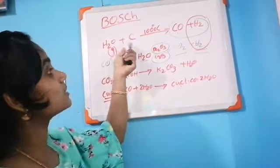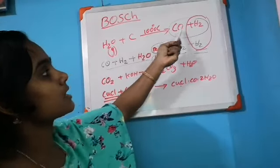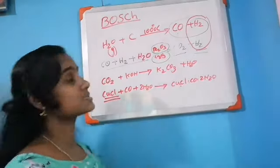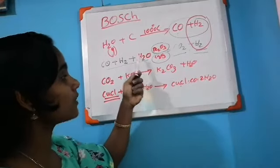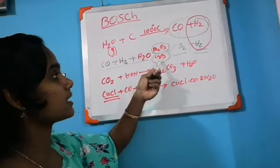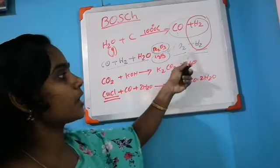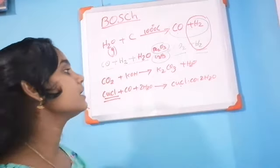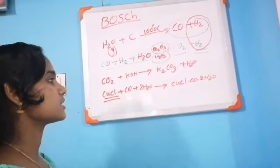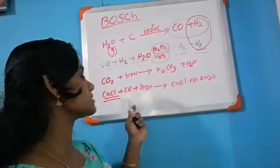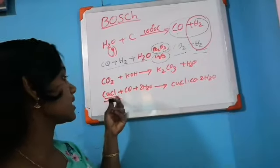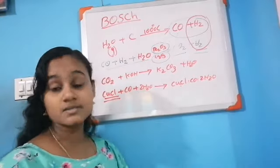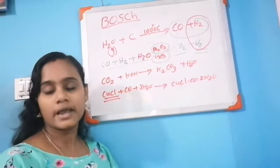To summarize: steam is passed over hot coke at 1000°C to form the water gas mixture of carbon monoxide and hydrogen. This is passed through excess steam with ferric oxide catalyst and chromium trioxide promoter to form carbon dioxide and hydrogen. Carbon dioxide is removed by caustic potash to form potassium carbonate and water. Carbon monoxide is removed by ammoniacal cuprous chloride forming an addition product. This is the Bosch process for manufacturing hydrogen.